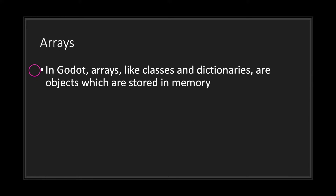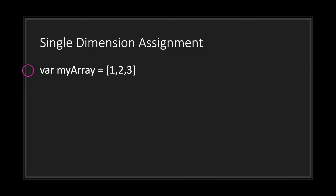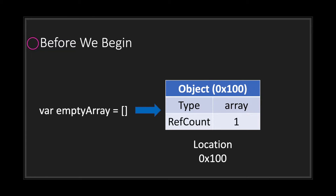In Godot, arrays are objects that are stored in memory. The key thing to keep in mind is that arrays are just objects. This is a basic single dimension array — we've declared a variable and assigned it an array. I like to call these simple arrays because they're just literal values. To preface: when you create an empty variable, what you're really doing is pointing that variable to an area in memory address, and this is what it would look like.